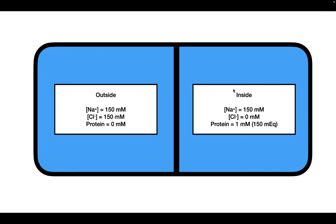On the inside, we also have 150 millimolar worth of positive charge, but in this case we have protein. Proteins can be very large and can have many different molecules attached to them. So even though we only have one millimolar worth of protein, this particular protein has 150 negative charges attached to it — making it 150 milliequivalents. Therefore, we have 150 negative charges and 150 positive charges, so the net charge is zero.